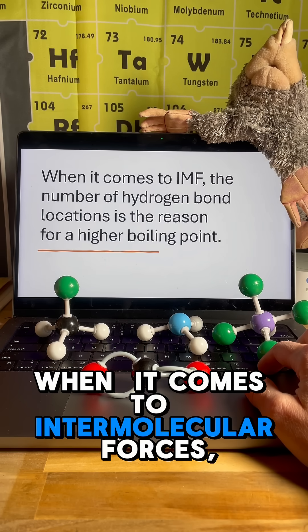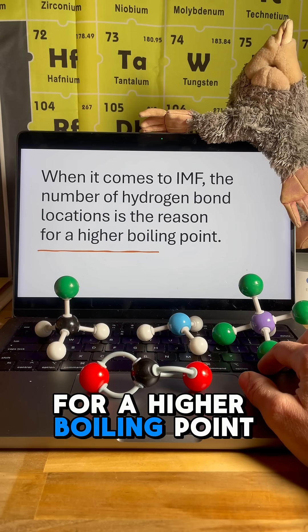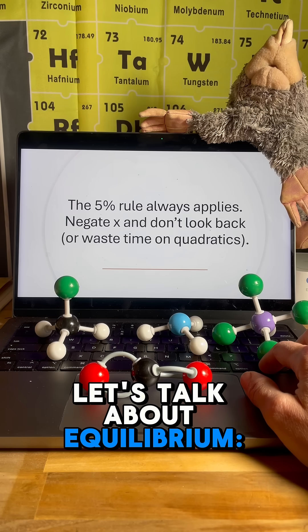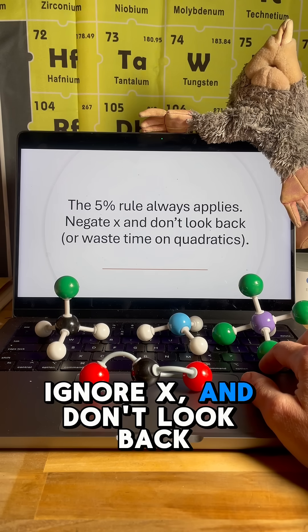When it comes to intermolecular forces, the number of hydrogen bond locations is the reason for a higher boiling point. Let's talk about equilibrium. The 5% rule always applies on the AP exam. Ignore X and don't look back.